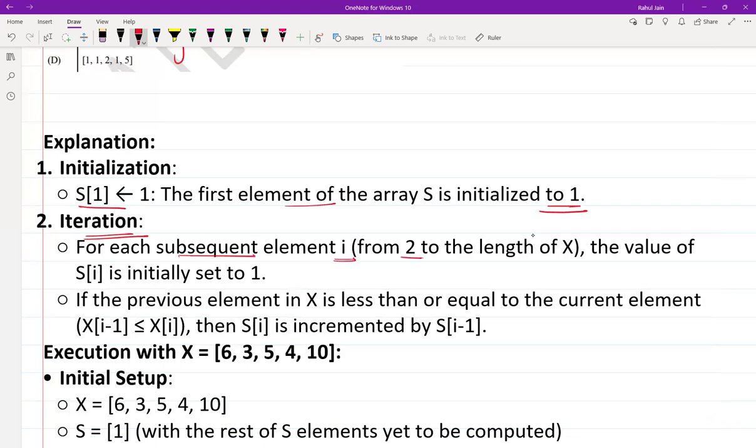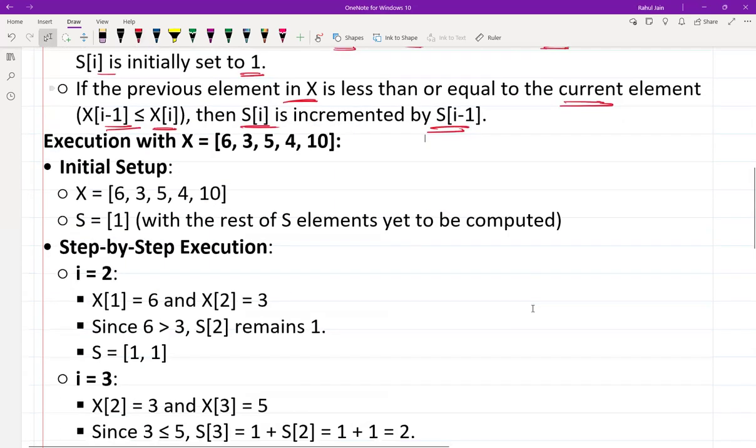The value of S[i] is initially set to 1. After that, if the previous element in X is less than or equal to the current element, X[i-1] less than or equal to X[i], as already written in the code, then S[i] is incremented by S[i-1]. Now we are going to execute with the value of X as [6, 3, 5, 4, 10].